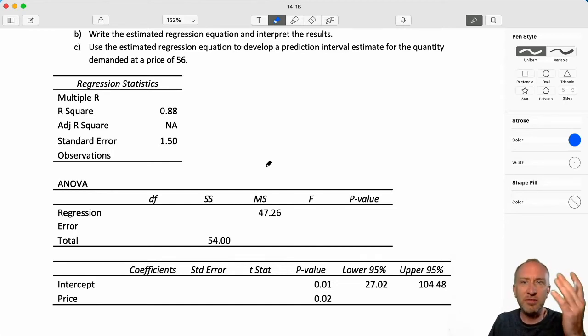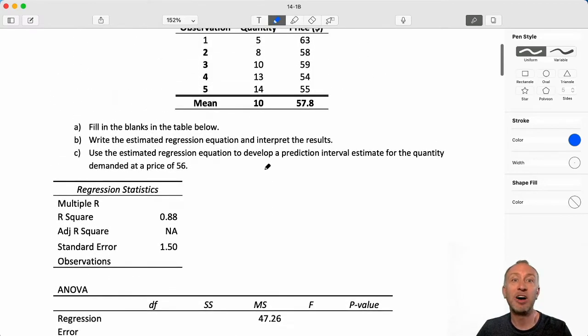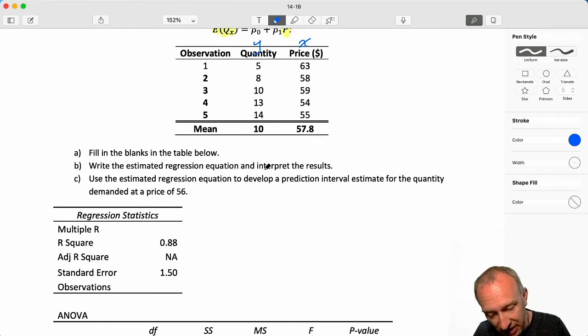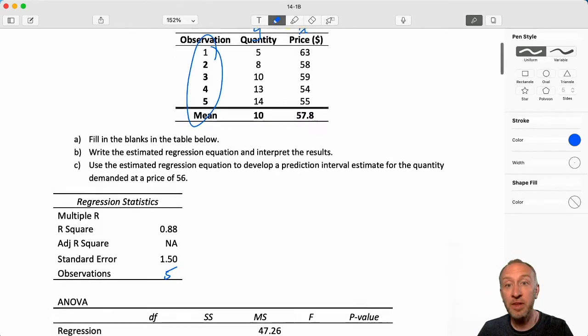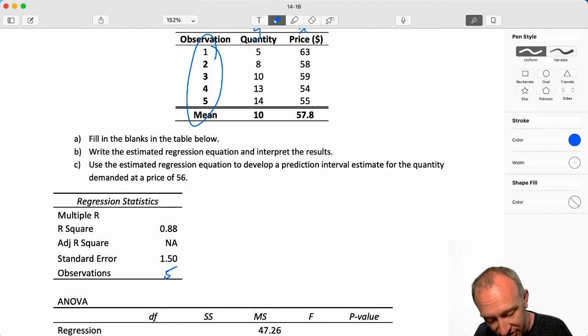So if we start with regression statistics, because there's not a lot missing there. The regression statistics, all I need is the multiple R and observations. Well, observations is the easiest by far. I can see there I have five observations. Multiple R, well that's just the square root of the R squared. And there I have my R squared is 0.88, so my multiple R is 0.94.